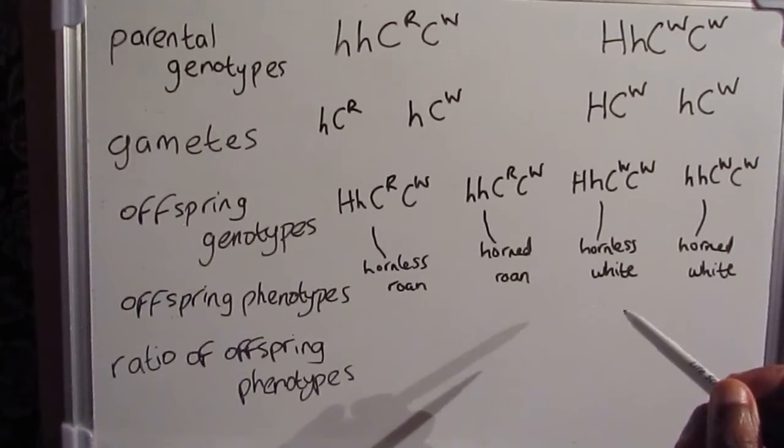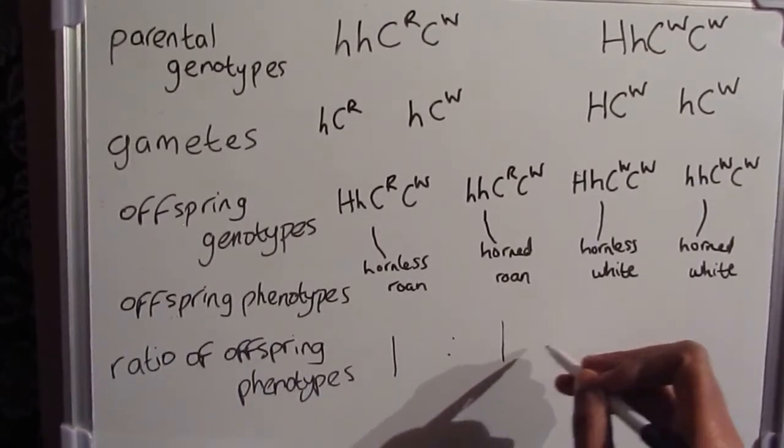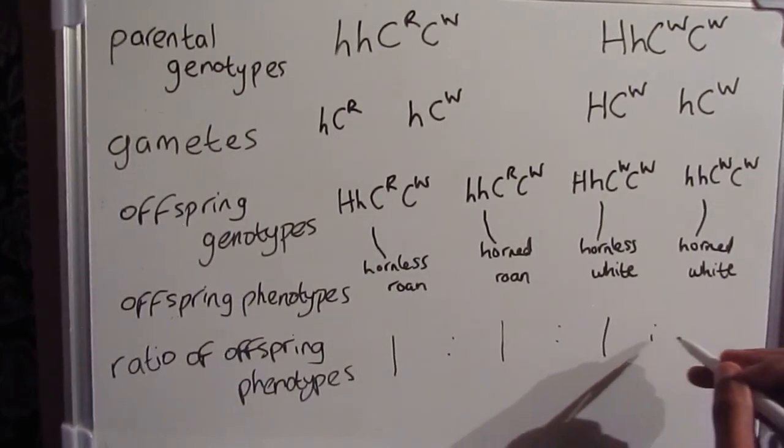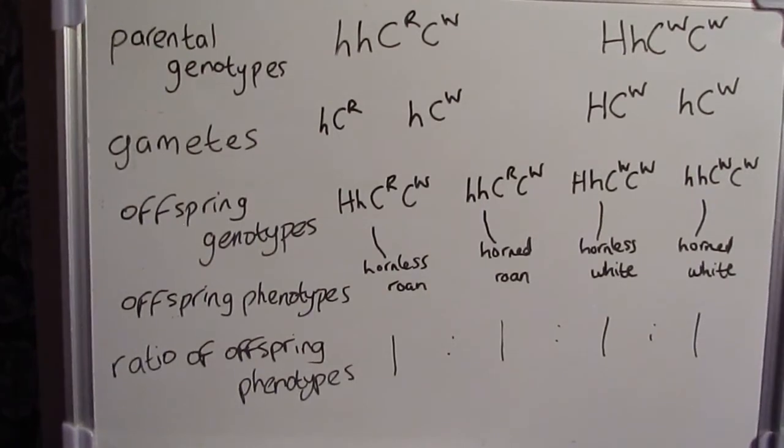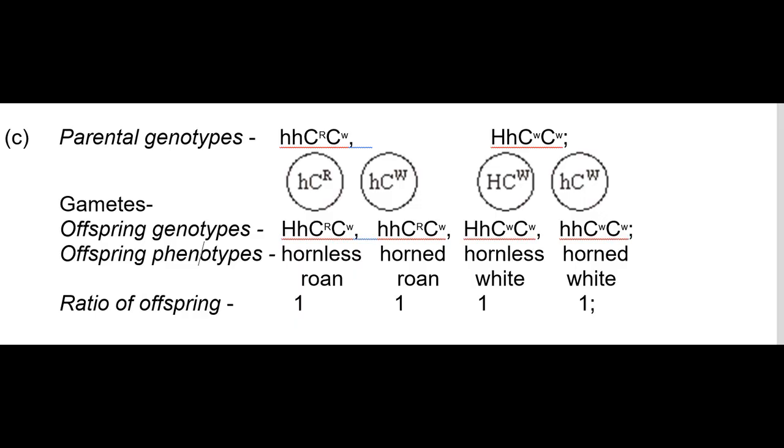This is a four mark question. So for you to pick up four marks, you will need the following. You'll need one mark for the parental genotypes, one mark for the correct gametes, one mark for derivation of correct offspring genotypes, and one mark for the ratio of the offspring. Again, just like the previous question I gave you, offspring phenotypes, you should not get a mark.